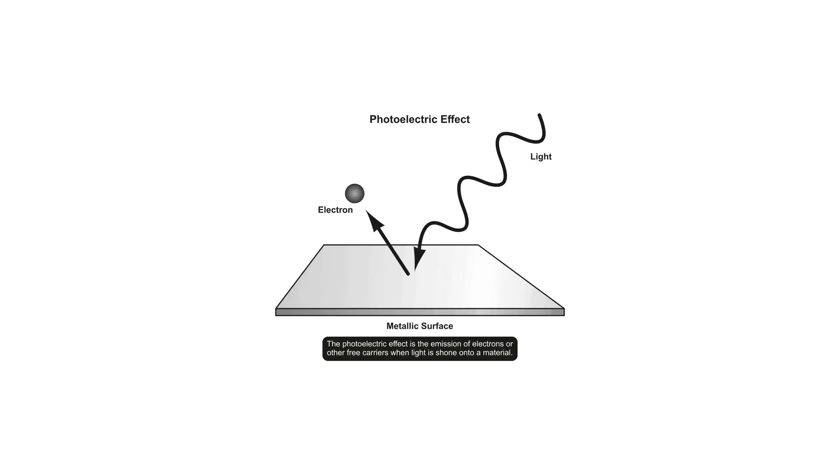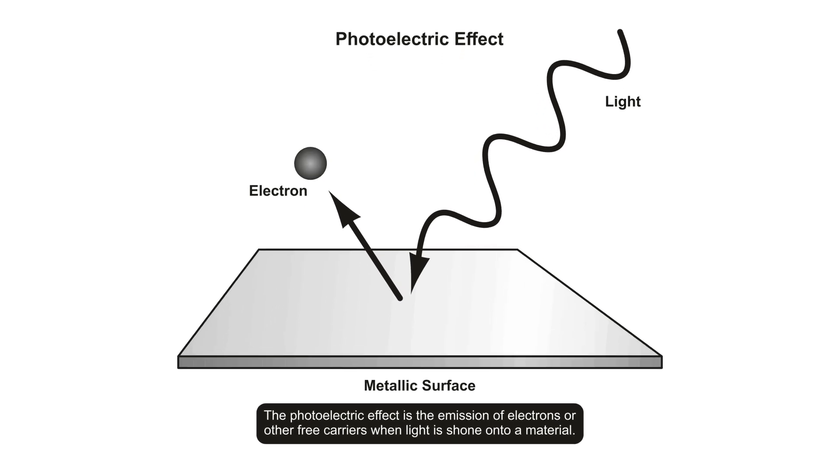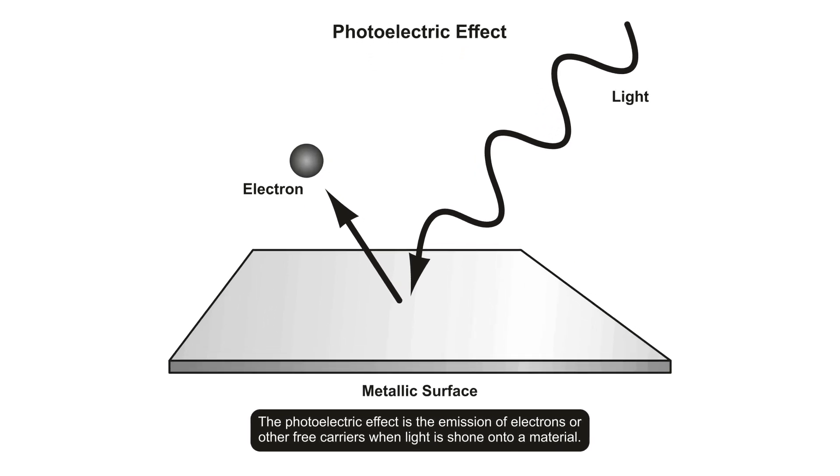Einstein came to the rescue and proposed that a beam of light is not a wave propagating through space, but a swarm of discrete energy packets known as photons. In 1905, Einstein proposed a theory of the photoelectric effect, later which he won the Nobel Prize for. He used a concept first put forward by Max Planck that light consists of tiny packets of energy known as photons or light quanta.